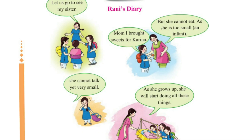Students, Rani called her friends to her home to introduce them to her new family member, her newly born sister Kareena. Then her mother said that Kareena is too small to eat anything. As she grows up, she will start crawling, walking and eating.